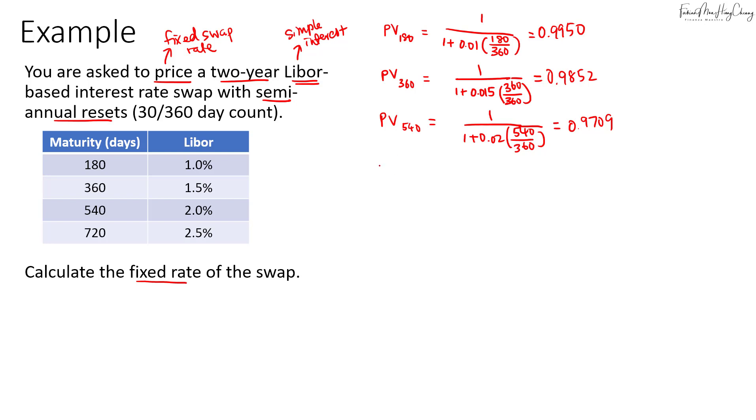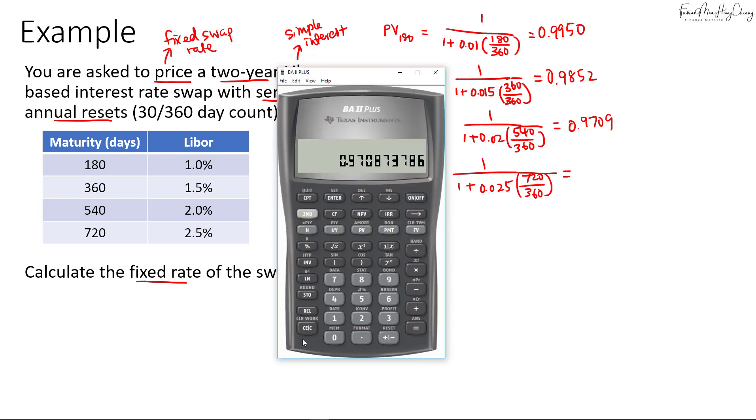Then lastly we have the PV for 720 days so that's 1 over 1 plus 0.025 times 720 over 360. So that's 1 plus 0.025 times 720 over 360. That's 2 times that's 1.05. We invert it. So that's 0.9524. We'll store that under number 4.